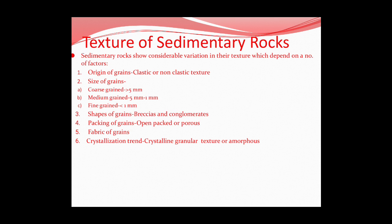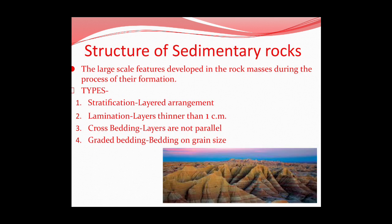The texture of sedimentary rock depends on a number of factors. First, the origin of grains — either clastic or non-clastic. Clastic means material formed as a mass due to the rolling of base rock material over a region. Then comes size of grains: coarse, medium, or fine. Shape of grains results in breccias and conglomerates. Next, packing of grains — either open-packed or porous. Then fabric of grains, whether arranged vertically or horizontally, and finally crystallization — the granular structure can be crystalline or amorphous.